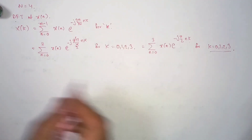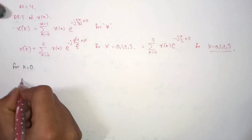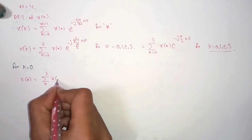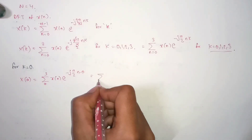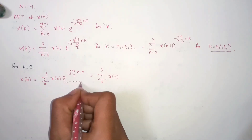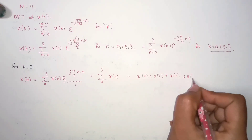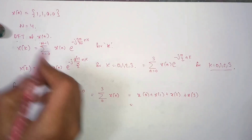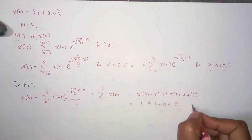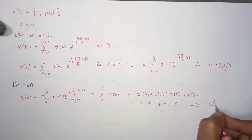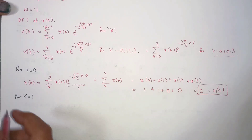For k equals 0, we substitute into the equation: summation from n equals 0 to 3 of x(n) times e to the power of minus jπ/2 times n times 0. The exponential becomes 1, so we sum x(0) plus x(1) plus x(2) plus x(3), which equals 1 plus 1 plus 0 plus 0. Therefore X(0) equals 2.